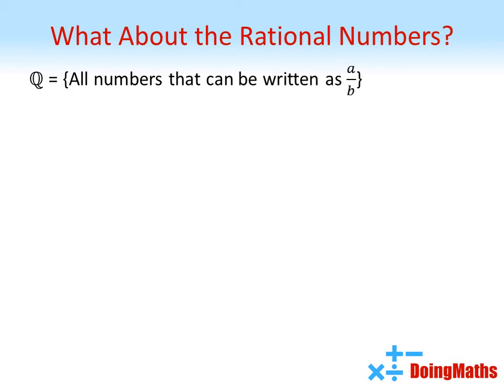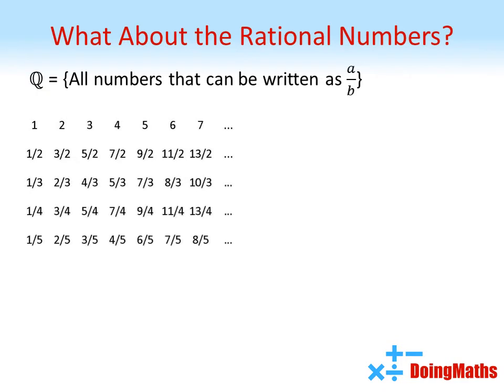To start with, let's just look at positive rational numbers. If we write all of the natural numbers in a row, in the second row we can then write all of the fractions with a two on the bottom, which have not already appeared in the first row. For example, we don't need to write two over two, as this equals one, which already appears in the first row. We do the same for thirds, for quarters, and so on.